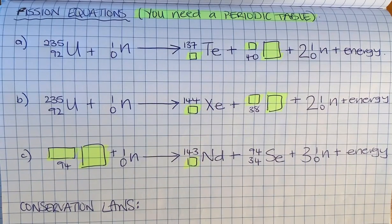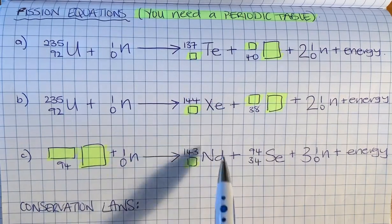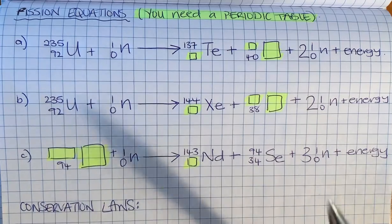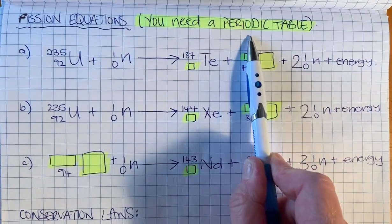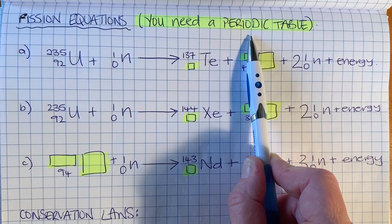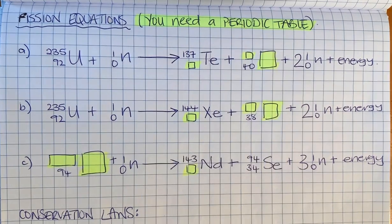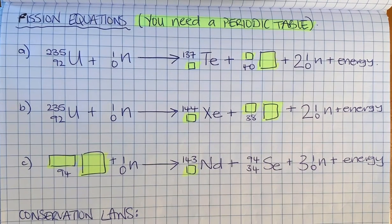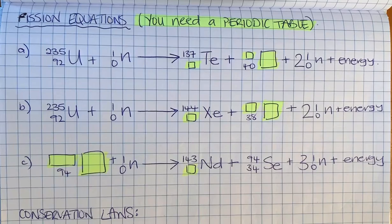I'm going to help you solve these fission equations. I've rewritten them in my book and highlighted the things we need to find. The first thing you'll need is a periodic table - there should be a link on the slide to find the dynamic periodic table, so make sure you have that open. The other thing we need to remind ourselves of is the conservation laws.